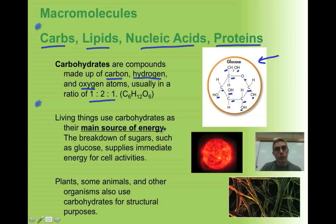Living things use carbohydrates as their main source of energy. The breakdown of sugar, such as glucose, supplies immediate energy for all cell activities. Whatever the cell needs to do to keep you alive, that's what it's going to use for its energy. Plants, some animals, and other organisms also use carbohydrates for structural purposes, and that's what's represented over here on the right-hand side. This is a form of starch, and starch is what we call a complex carbohydrate because you have a lot of these smaller units of glucose possibly hooked together to form a long chain, and that's going to be able to create these structural units that you see right here.